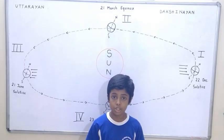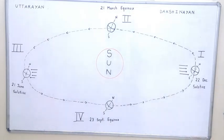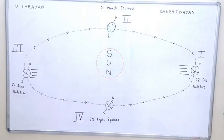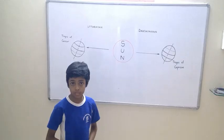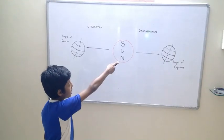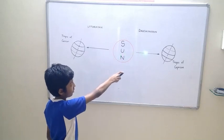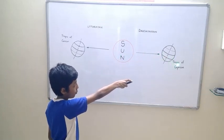From 23rd September to 21st March, this part is called Dakshin Ayan because the southern part receives more light from the sun. From 21st March to 23rd September, this part is called Uttar Ayan because the sun's rays fall on the northern part of the earth. In the Dakshin Ayan phase, most of the sun's rays fall on the line called the Tropic of Capricorn.